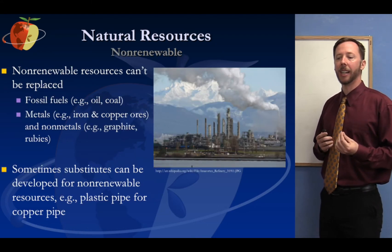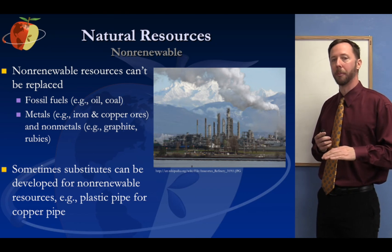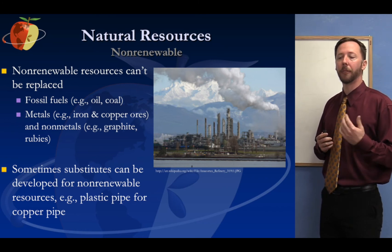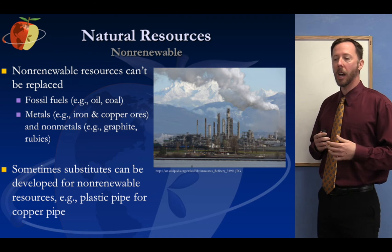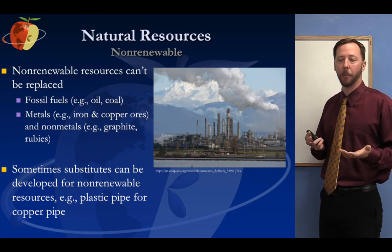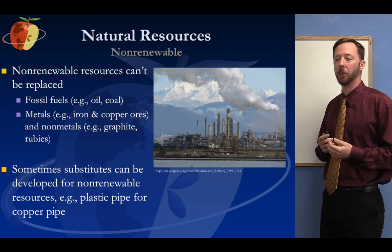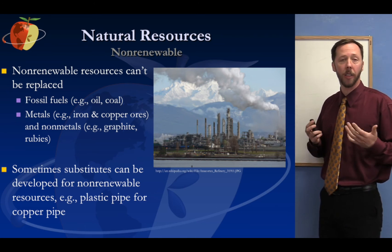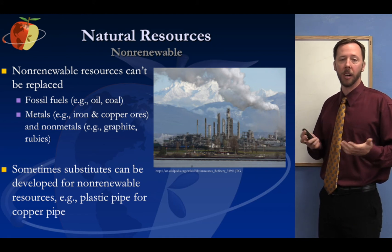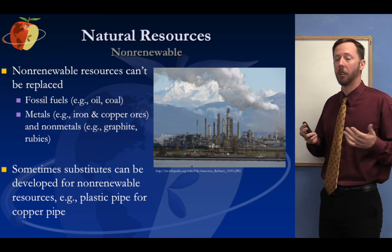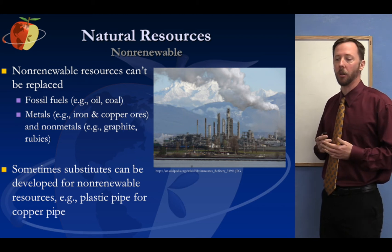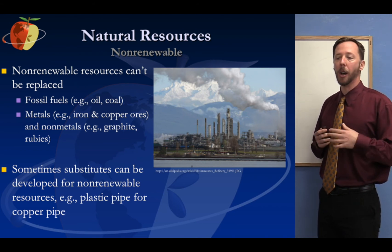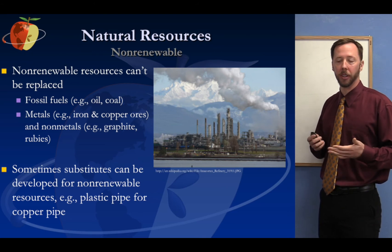The basic idea is renewable resources can potentially be replaced, whereas non-renewable resources just can't be. Things like fossil fuels — oil and coal — once harvested and utilized, they're gone. We can't replace that. Also, metals and certain non-metals, things like iron and copper ore: once we mine all of it in an area, there's a finite amount on Earth. Non-metals used in production, like graphite or gemstones like rubies, are also non-renewable. There's really a finite supply.